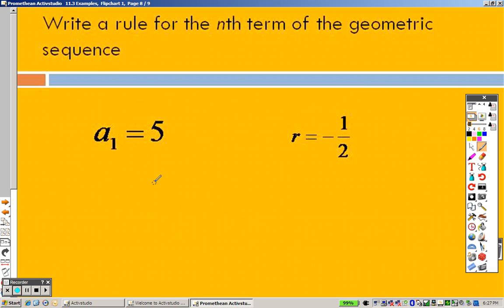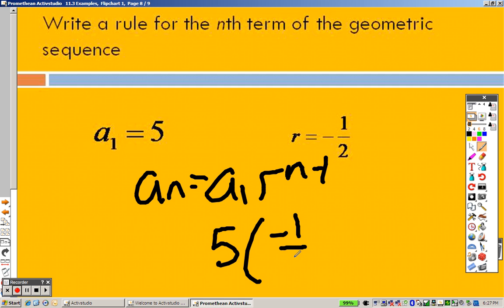Taking a look at this next one. Just need to know the formula. A to the 1, r to the n minus 1, that's 5. That's negative 1 over 2 to the n minus 1. There's the formula again. Done already.